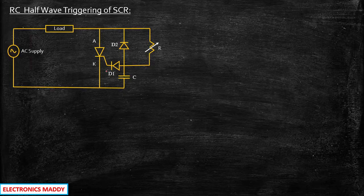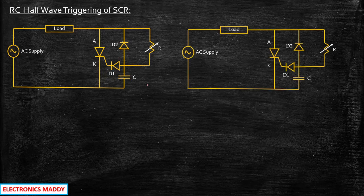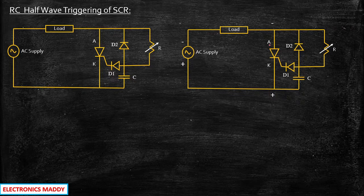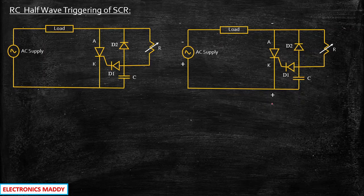The operation is very simple. Let us first consider the negative half cycle of the AC supply. During the negative half cycle, the polarity of the supply will be minus and plus. When negative supply is applied, it will appear with some voltage drop through the load — negative and positive. That means the anode of the SCR is connected to negative polarity and cathode is connected to positive polarity. So even if you give gate supply at this point, the SCR will not turn on — it is reverse biased.